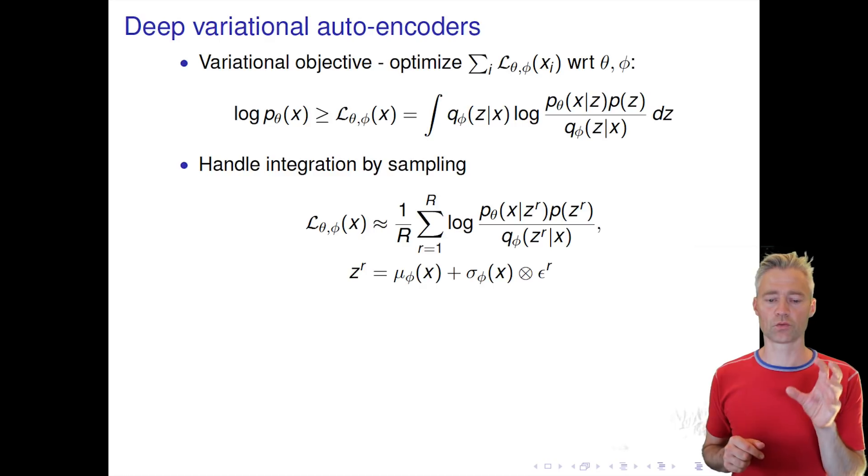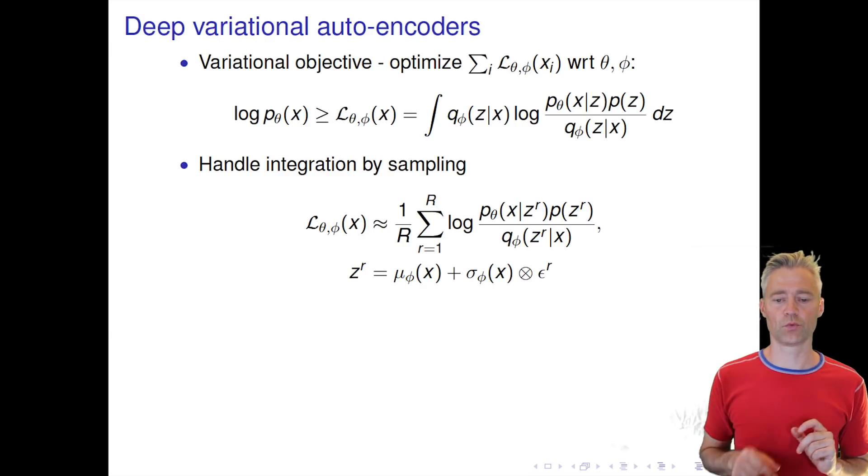We can now write c—instead of using c as the stochastic variable, we can use an epsilon, which is simply a normally distributed variable with zero mean and unit variance.